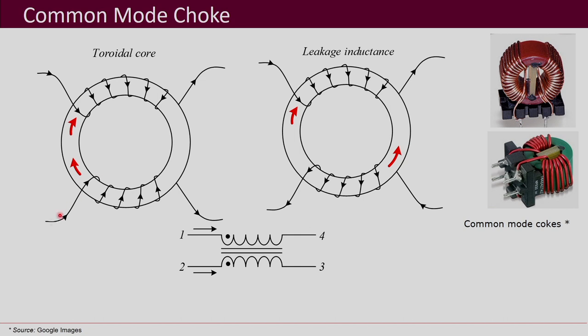Now if common mode and differential mode currents have to pass through this kind of a choke — a common mode choke — let us see what happens with the flux. If the current directions are the same, the flux produced by one winding and the flux produced by another winding aid each other. So for currents going in the same directions, those currents will see an inductance because of this toroidal core.